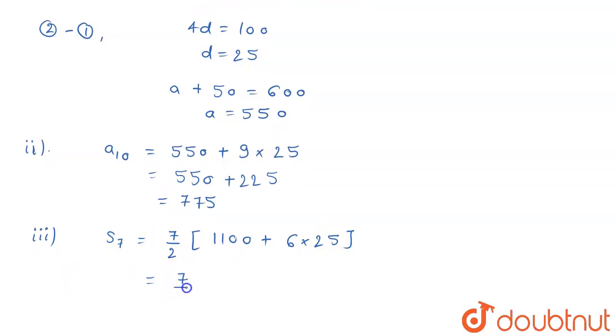From here you can say it is going to be 7 by 2 into 1250. Now you can simplify it.